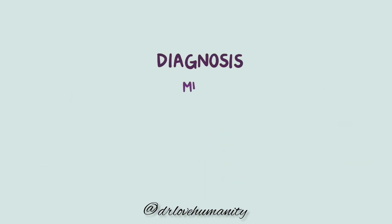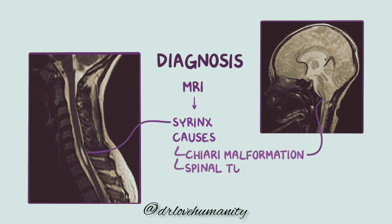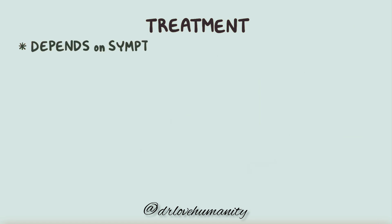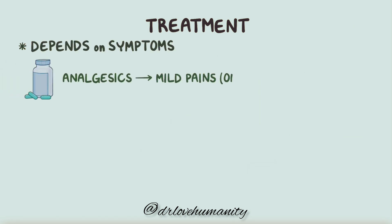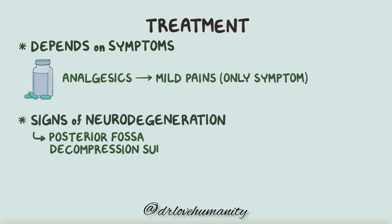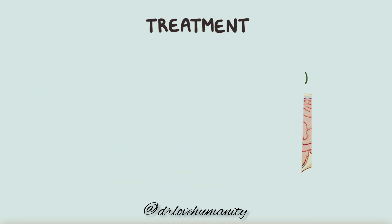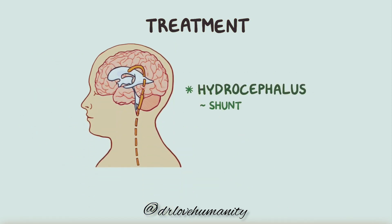Syringomyelia is typically diagnosed using an MRI, which can help visualize the syrinx as well as possible causes like Chiari malformation and spinal tumors. Treatment of syringomyelia typically depends on the symptoms. Analgesics can be used if mild pain is the only symptom. If signs of neurodegeneration are present, a posterior fossa decompression surgery is required — a type of craniotomy where a portion of the back of the skull is removed in order to widen the foramen magnum, which helps release the buildup of pressure. If hydrocephalus is present, a shunt to drain the excess fluid within the brain might also be required. Catheters may also be used to drain the syrinx directly.